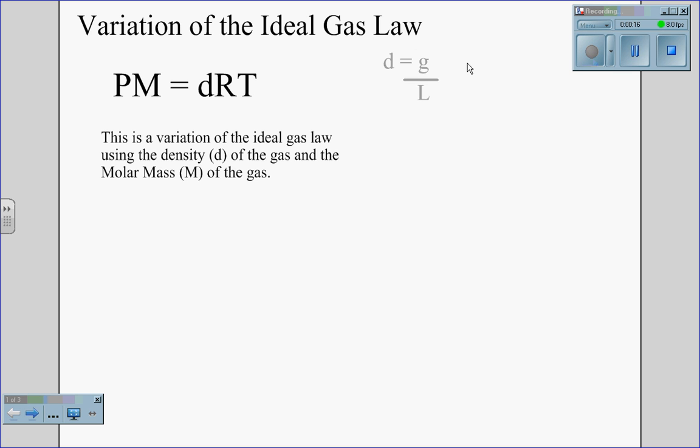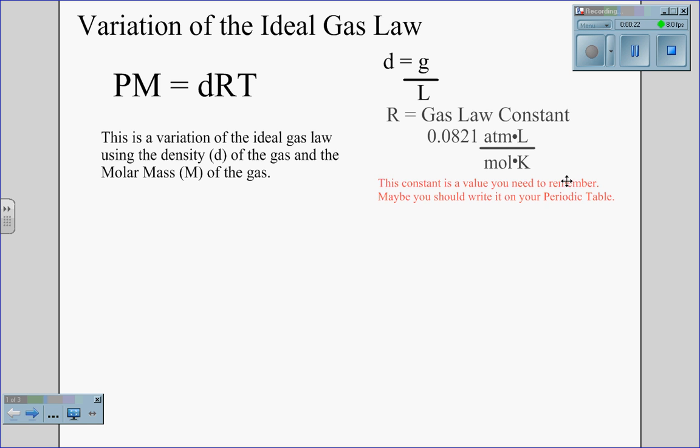Density is lowercase d, measured in grams per liter. The Ideal Gas Law constant remains the same, 0.0821 atmospheres times liters times moles Kelvin. This constant you need to remember and should have written in your periodic table. Pressure must be in atmospheres to match the Ideal Gas Law constant.